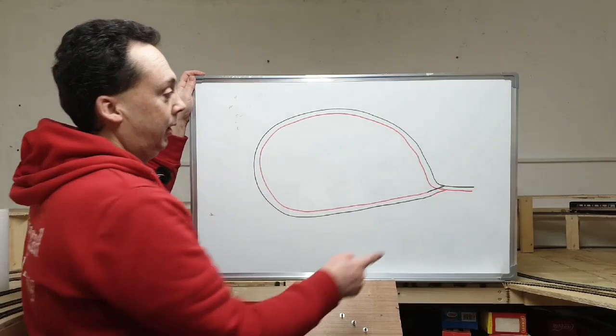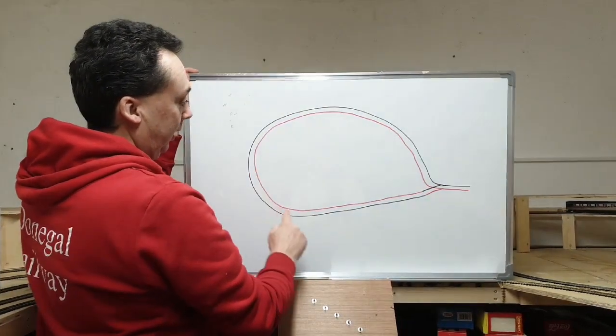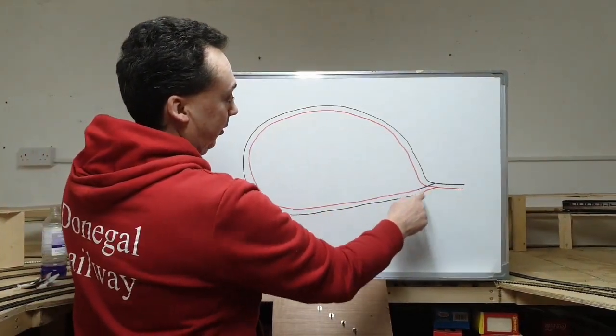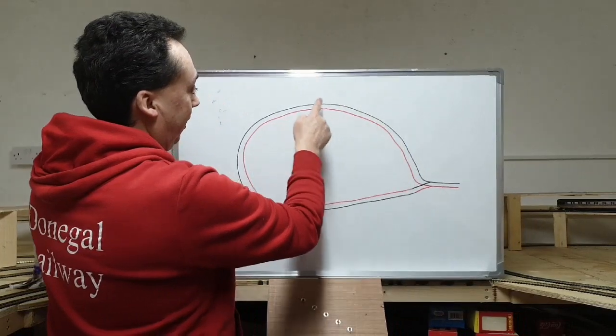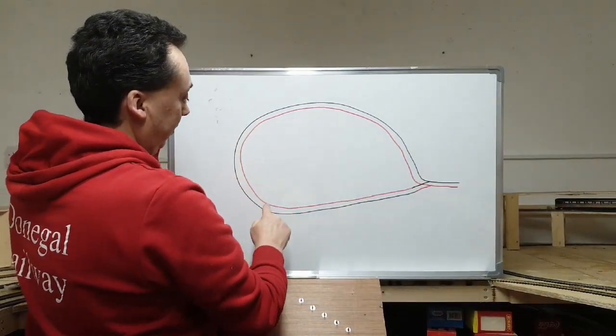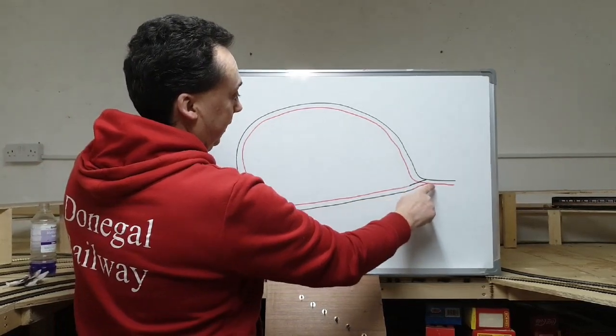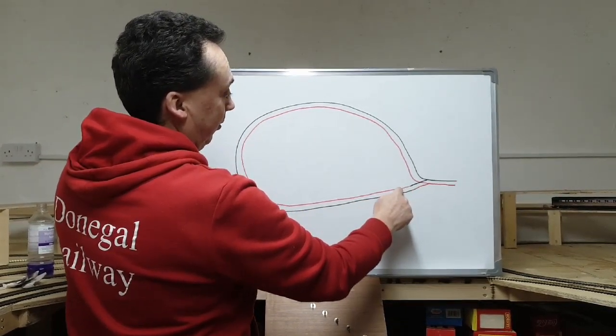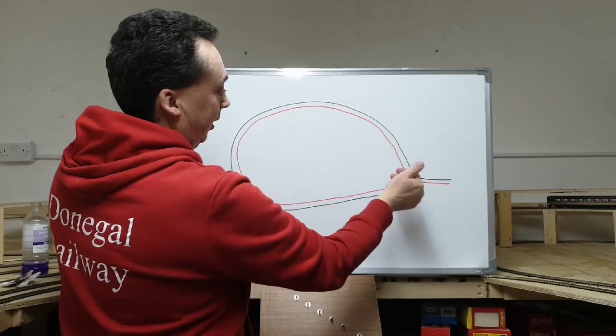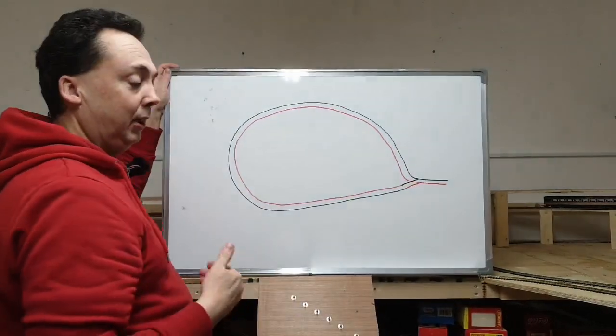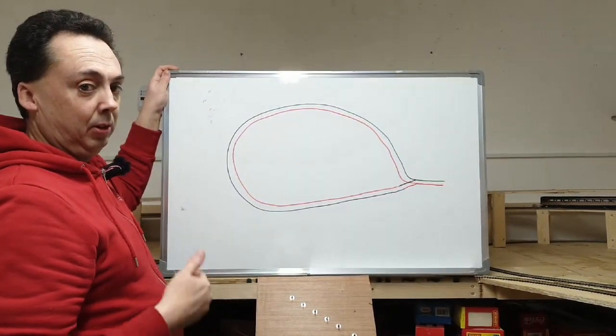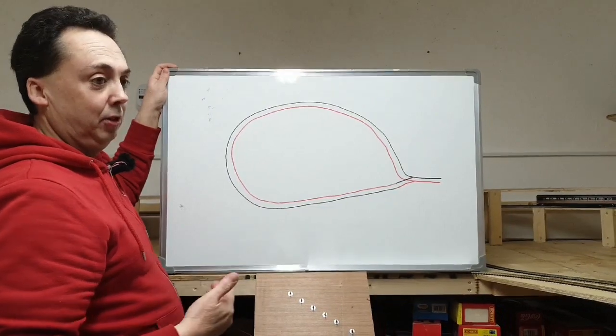Here we can see with a reversing loop, how the circuit goes all the way around and goes back on itself through a point. And if we follow the black line around, which is the negative, we can see how when it gets back to the point, it's now on the inside. Conversely, the red line is now on the outside. So when you flick the point over, it's going to cause a short and your engines are going to stop and your system is going to show a fault.